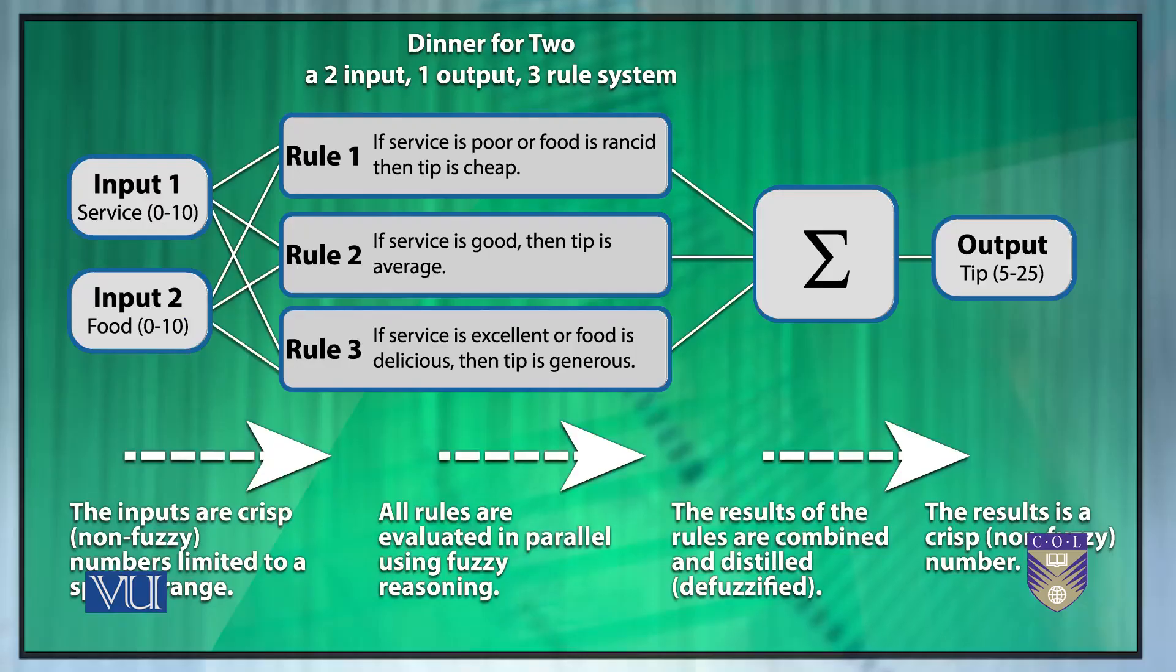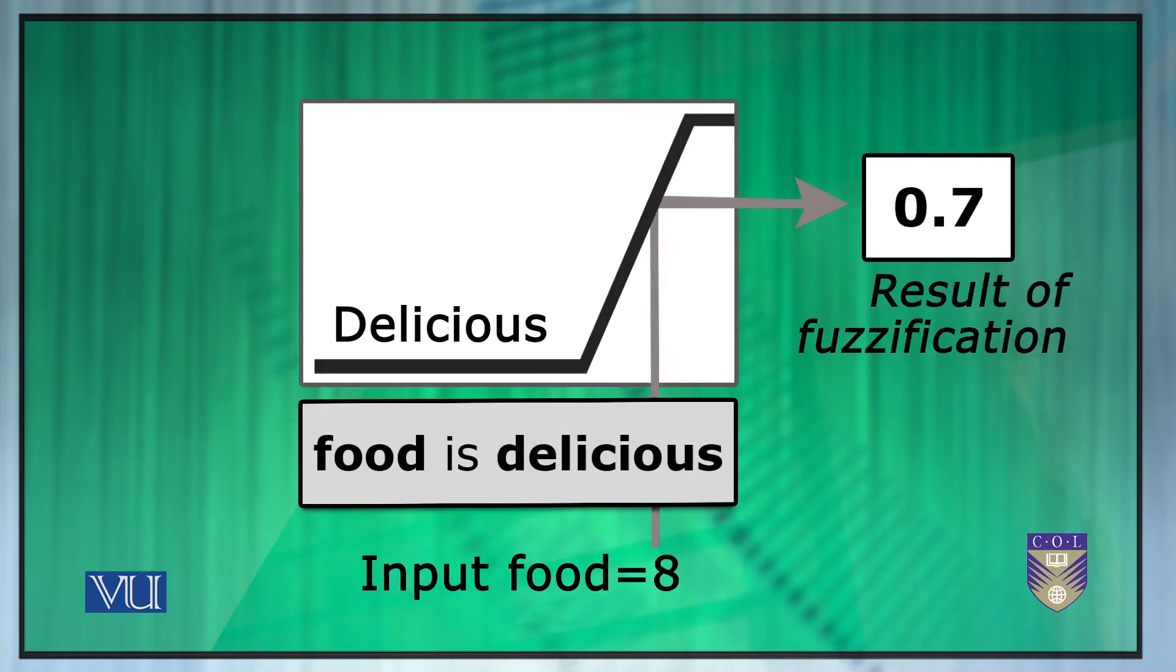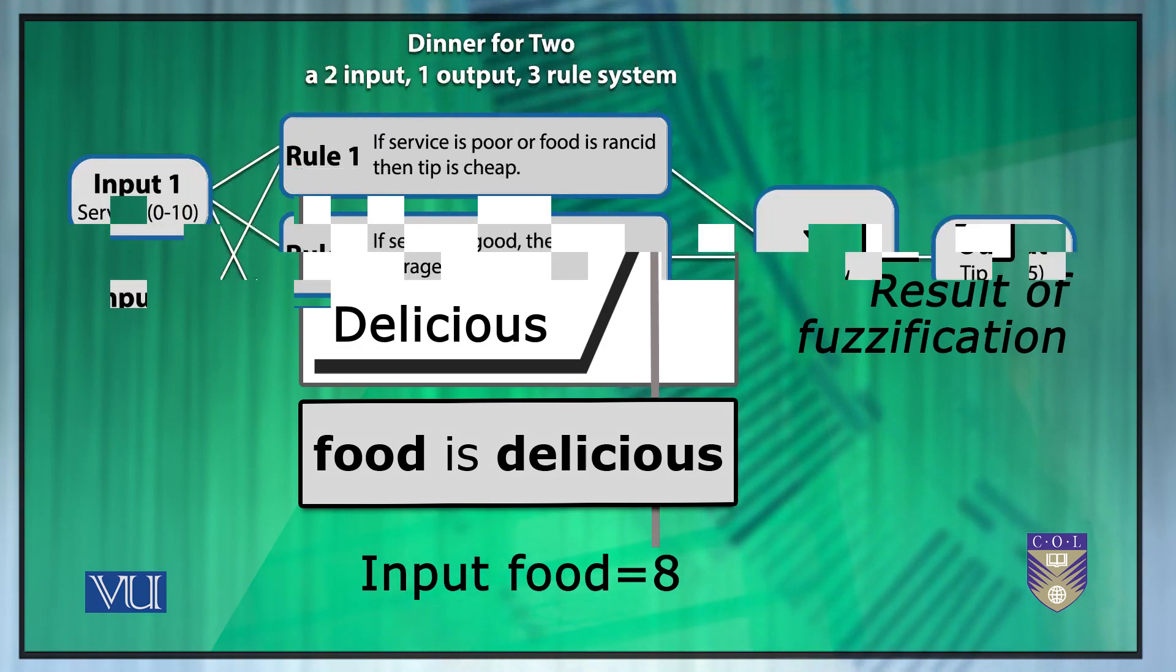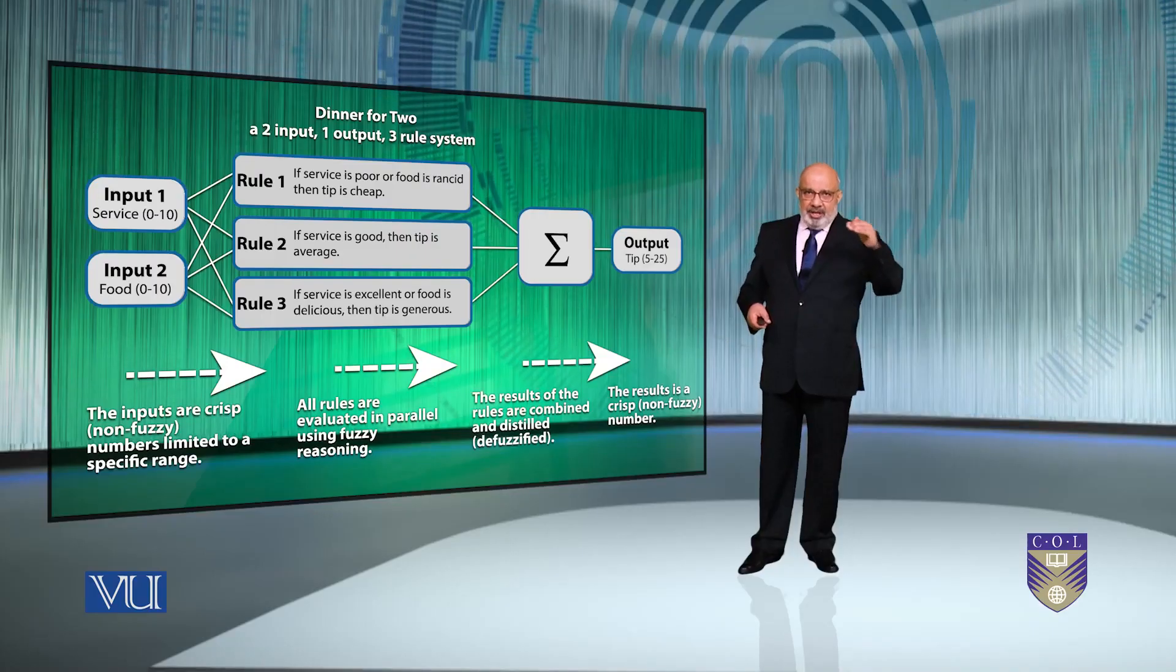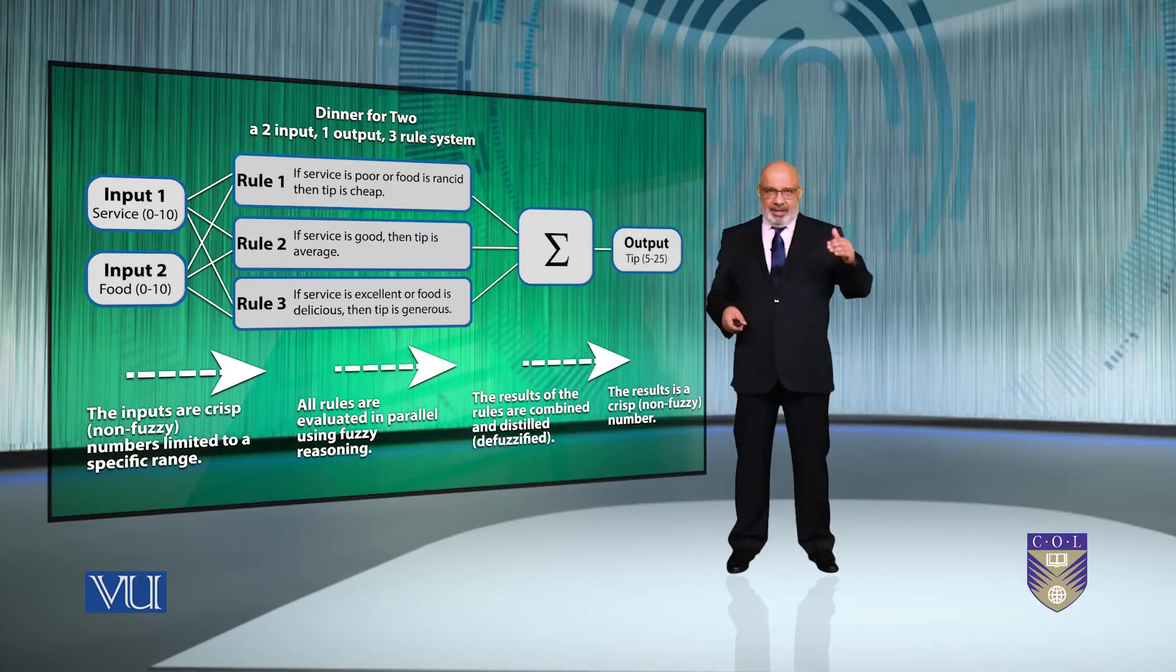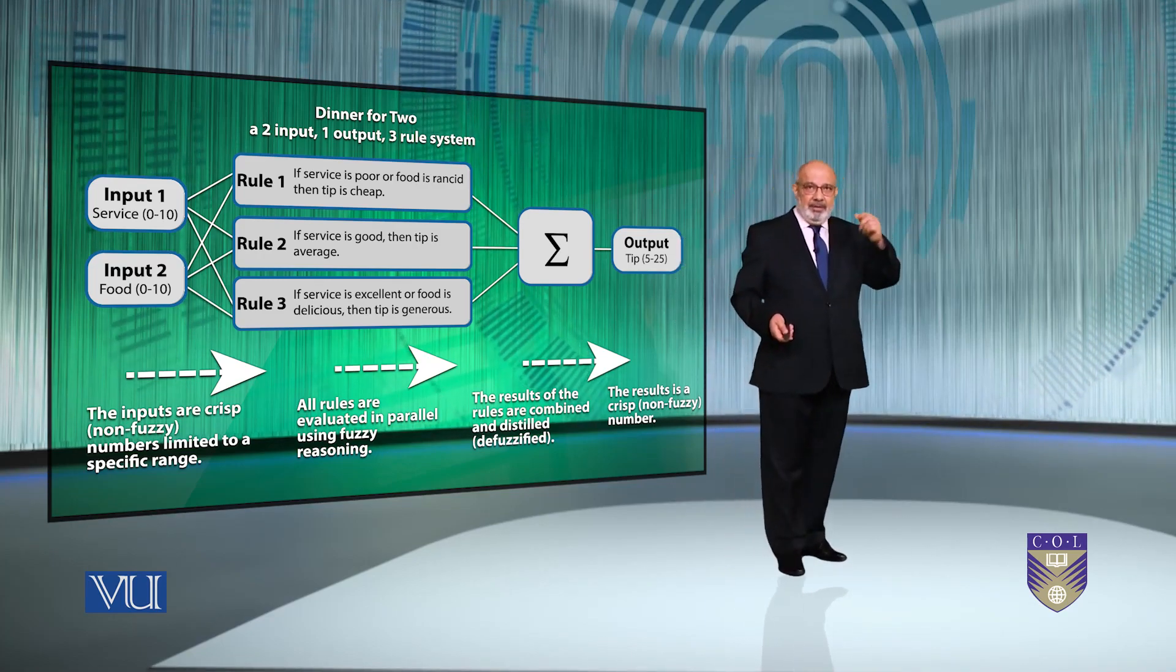So the diners have rated the food as an 8. And given the graphical definition of the delicious, that corresponds to value of 0.7 of the delicious membership function. Now we apply the fuzzy operator. Once the inputs have been fuzzified, we know the degree to which each part of the left-hand side or the antecedent has been satisfied for each rule. We apply the fuzzy operator.